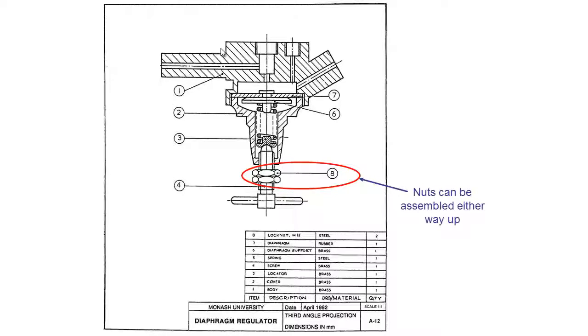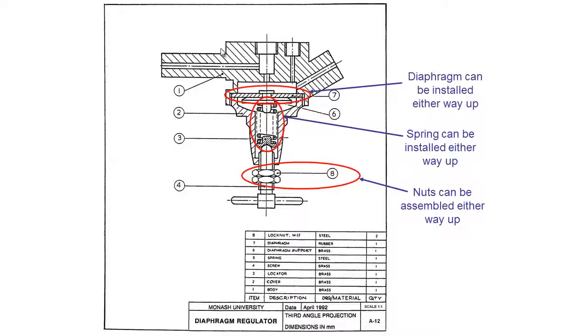For these ones it doesn't matter which way we do it, but if you think about some types of lock nuts they require to go on one way or another, otherwise they can't actually be fastened on properly or they won't perform their job correctly. We also have this spring, which can be installed either way up, and in this case it doesn't matter. And we have a diaphragm that can be installed either way up. Sometimes you might get a diaphragm with a special lip on it that can only be installed one particular way, but this is not the case with this particular diaphragm. So for this drawing there are no special assembly instructions required.